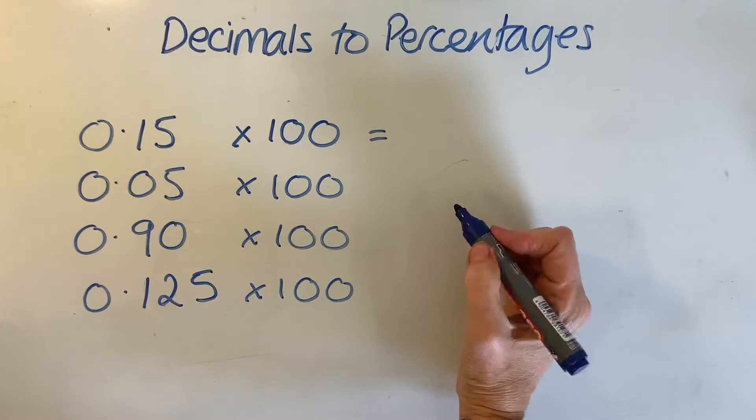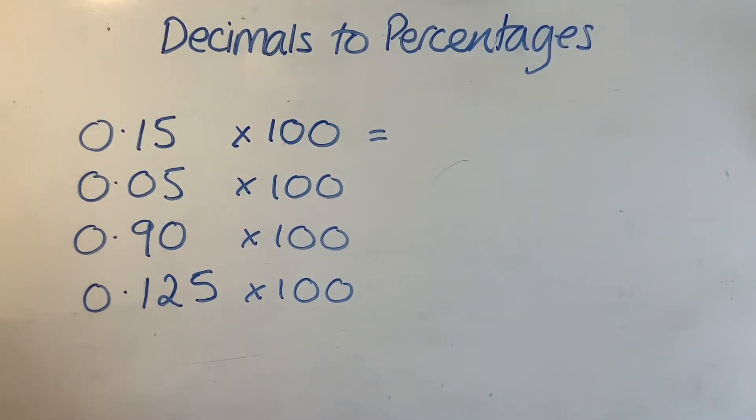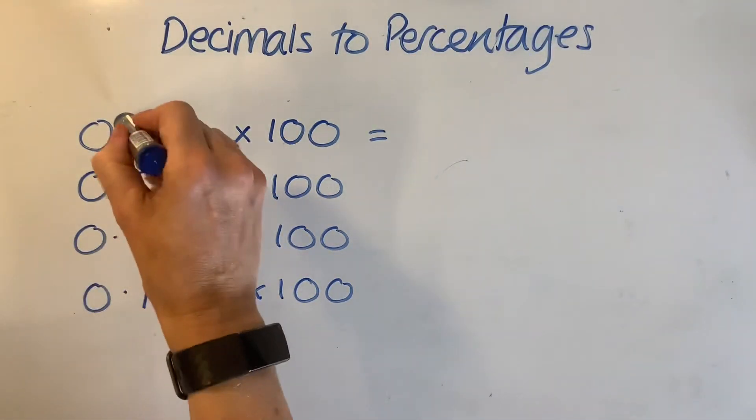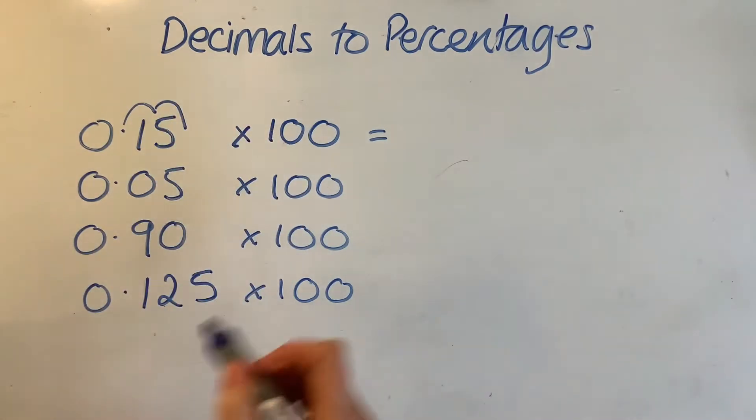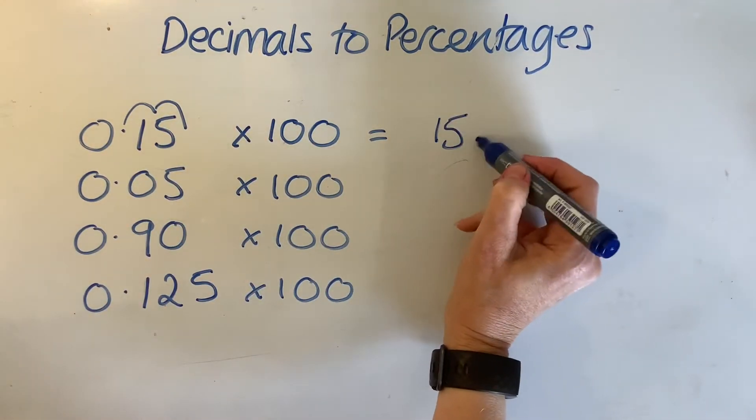Okay, so to times by 100, we move the decimal point two places. Okay, 1, 2. So we end up with 15%.